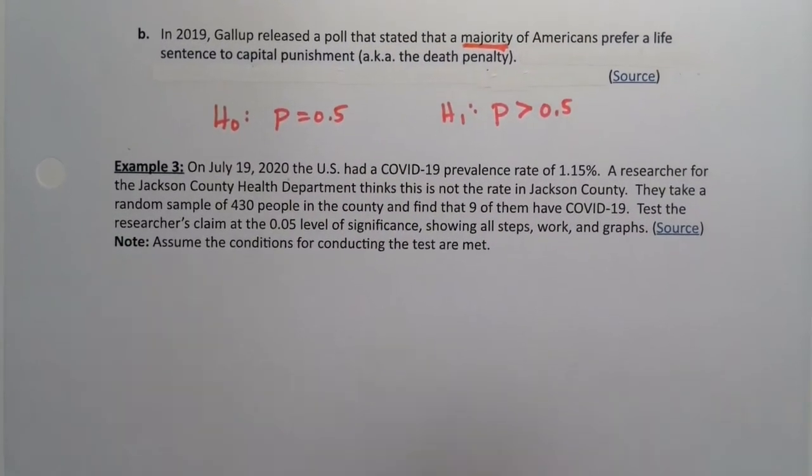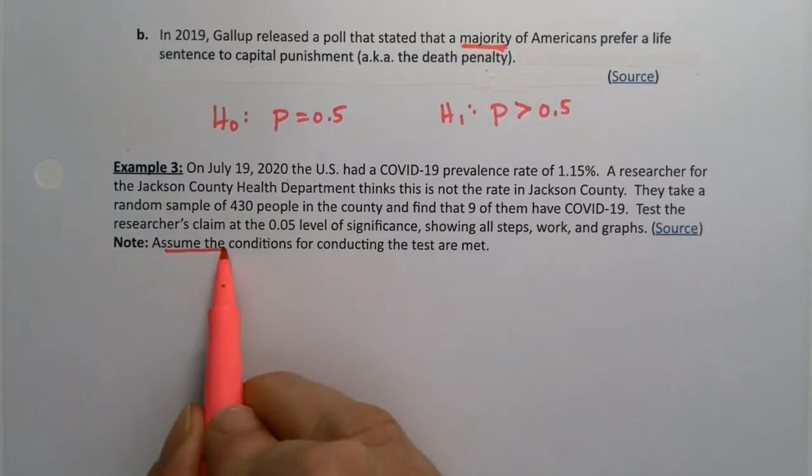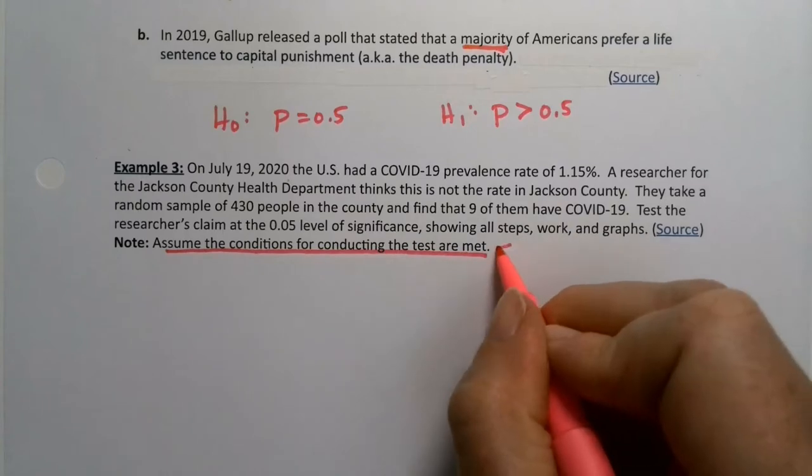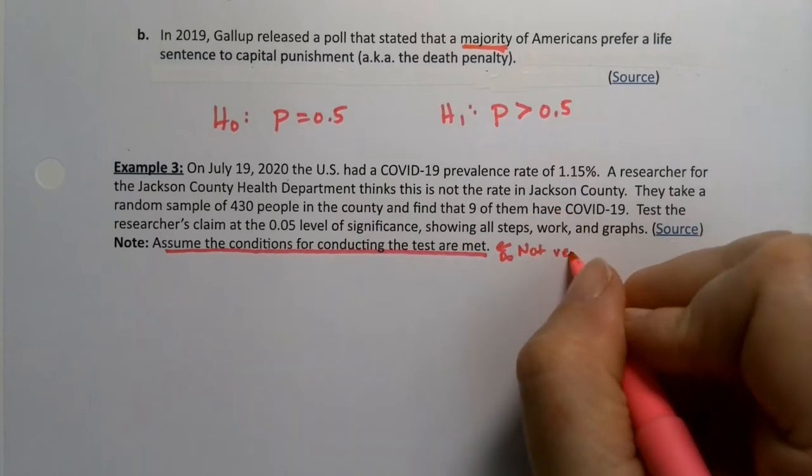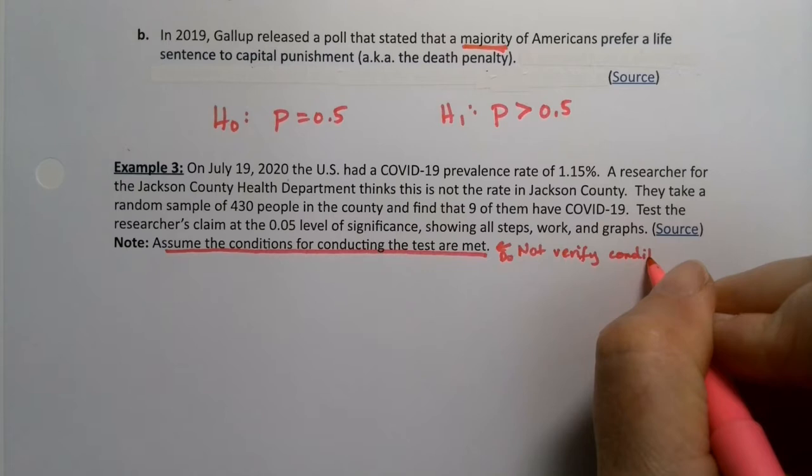On July 19th, 2020, the U.S. had a COVID-19 prevalence rate of 1.15%. A researcher for the Jackson County health department thinks this is not the rate in Jackson County. They take a random sample of 430 people in the county and find that nine of them have COVID-19. Test the researcher's claim at the 0.05 level of significance showing all steps, work, and graphs. Note: Assume the conditions for conducting the test are met.